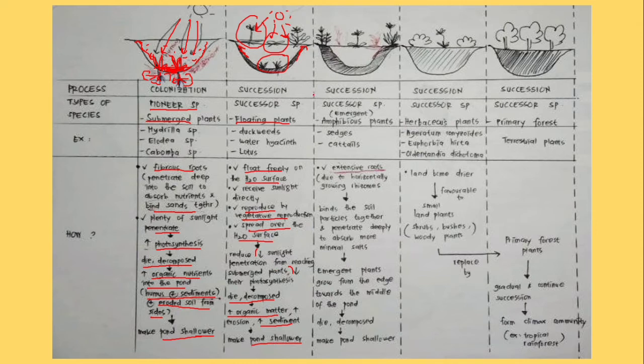And this one will be favorable for next successor species, emergent plant. Emergent, they are just emerging. This amphibious plant - why we call it amphibious? Because they can be on land and also in water.